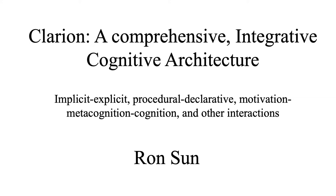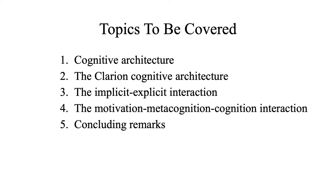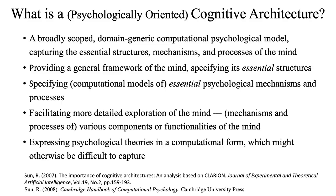In this talk, I will discuss the Clarion cognitive architecture, emphasizing some of its distinguishing characteristics. I will start by saying a few words about cognitive architecture in general. Then I will discuss specifically the Clarion cognitive architecture, emphasizing the interaction between implicit and explicit processes. I will also describe the motivation-metacognition-cognition interaction. I will end with some concluding remarks.